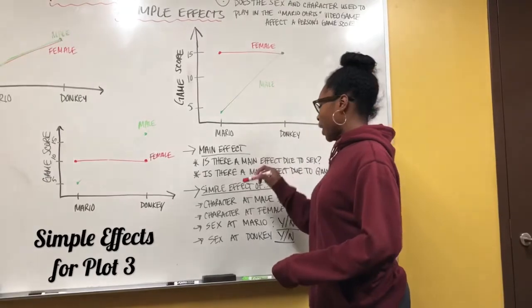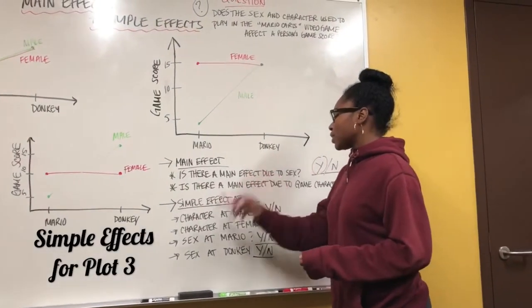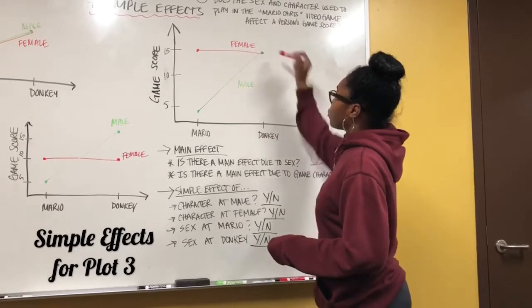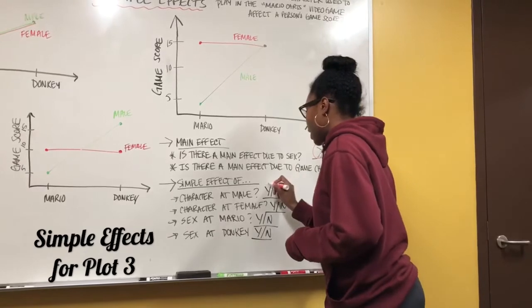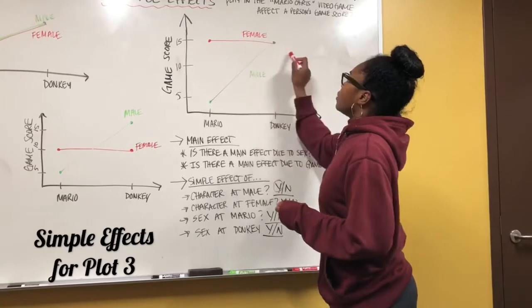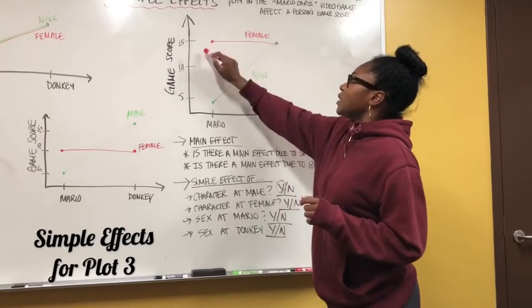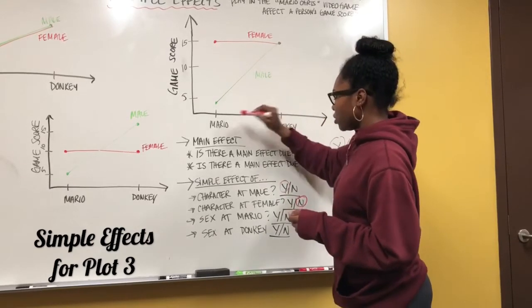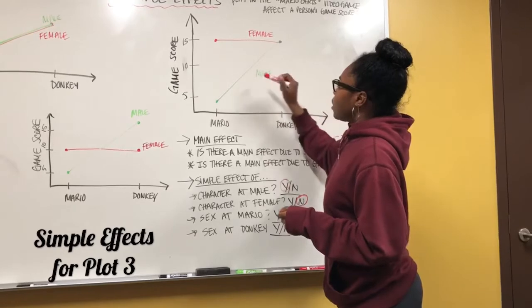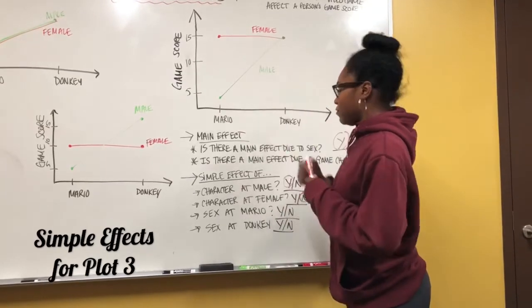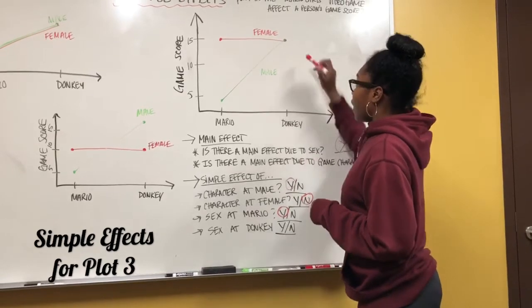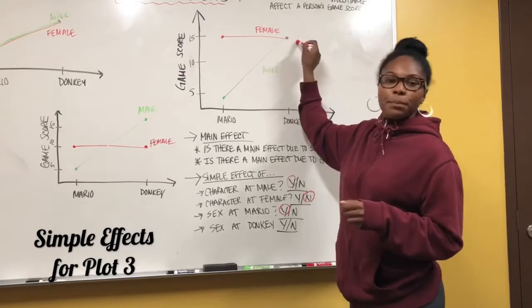Continuing on with simple effects for the third graph. Is there a simple effect of character at male? Yes — males tend to score higher with Donkey than with Mario. For simple effect of character at female, there's nothing that changed from them choosing Mario or Donkey because it stayed at 15, so we put no. For sex at Mario, there is a simple effect because males score less than females — males are at 5 and females at 15. So we put yes. For sex at Donkey, we only pay attention to when they chose Donkey, and there is no simple effect because it's the same. So we put no.